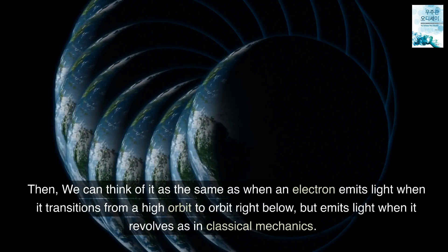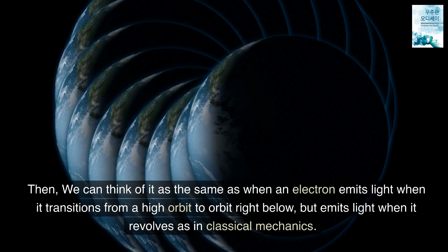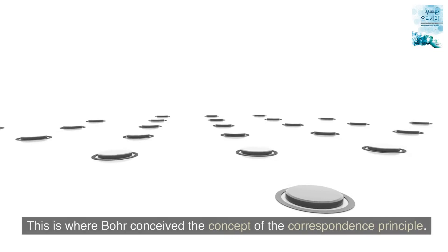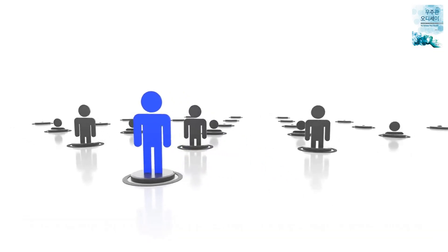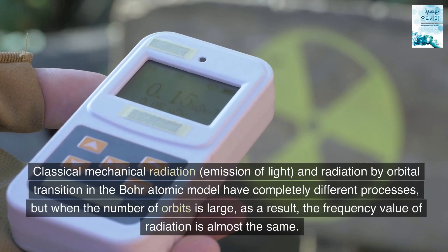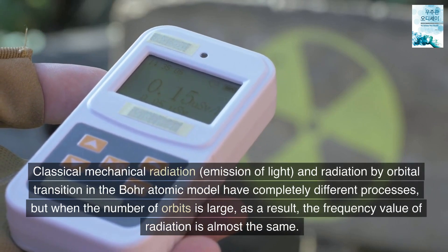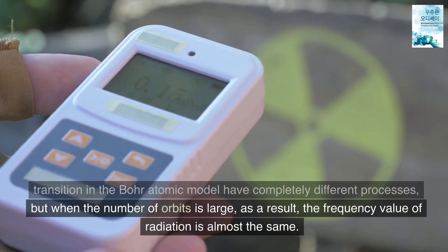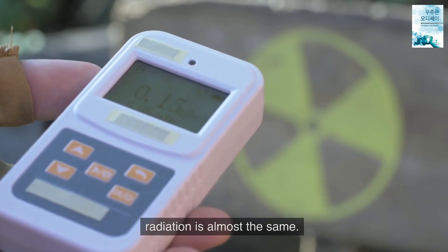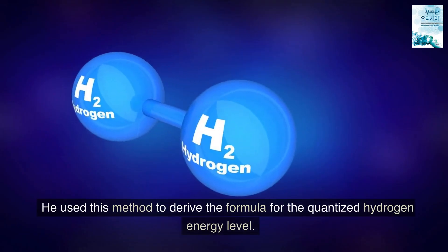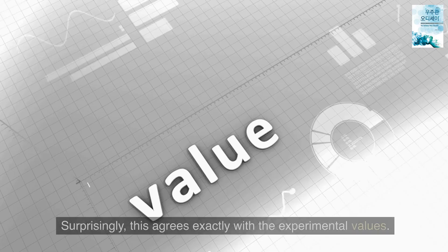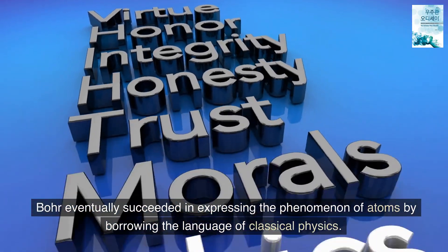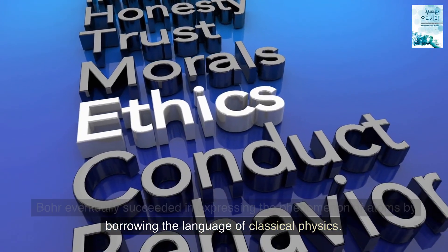Then, we can think of it as the same as when an electron emits light when it transitions from a high orbit to orbit right below, but emits light when it revolves as in classical mechanics. This is where Bohr conceived the concept of the correspondence principle. Classical mechanical radiation, emission of light, and radiation by orbital transition in the Bohr atomic model have completely different processes. But when the number of orbits is large, as a result, the frequency value of radiation is almost the same. He used this method to derive the formula for the quantized hydrogen energy level. Surprisingly, this agrees exactly with the experimental values.